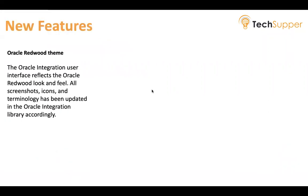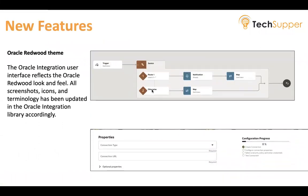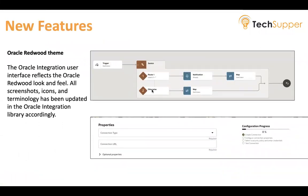Oracle Integration 3 uses the Oracle Redwood theme. Every screen and every action you use in integration uses the Redwood theme. The Oracle Integration user interface reflects the Oracle Redwood look and feel. All the screenshots, icons, and terminology have been updated to meet the Redwood theme, so you will see this as a big change in the user interface.